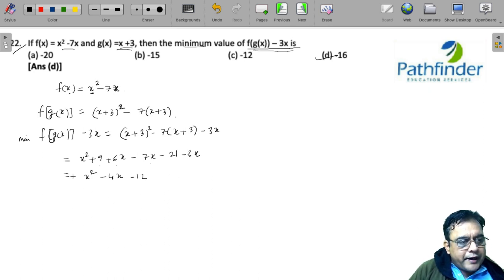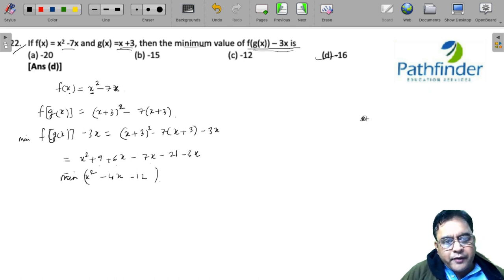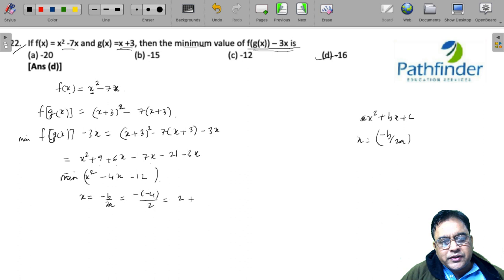So you have to find minima of this. So you know that for any quadratic polynomial, if you have a quadratic polynomial of the form ax² + bx + c, then the minima occurs at x = -b/2a. So the minima here will occur at x = -(-4)/2. That is x = 2.